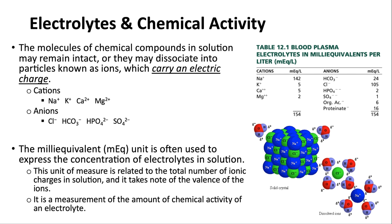This is important because when we do calculations on IV products and hospital-type products, we focus on the electrolytes that need to be replaced or adjusted in our IV solutions. Electrolytes are things like sodium, potassium, calcium, and magnesium — those are the cations. They are often coupled with anions that include chloride, bicarbonate, phosphate, or sulfate.